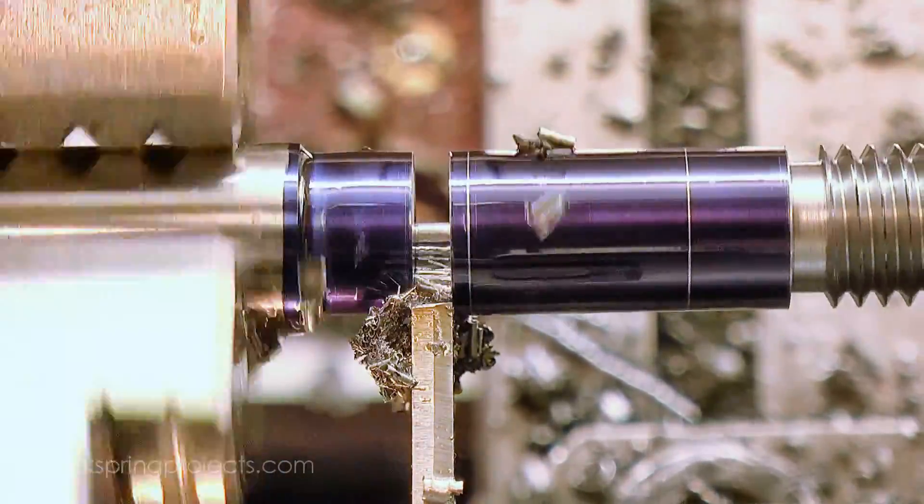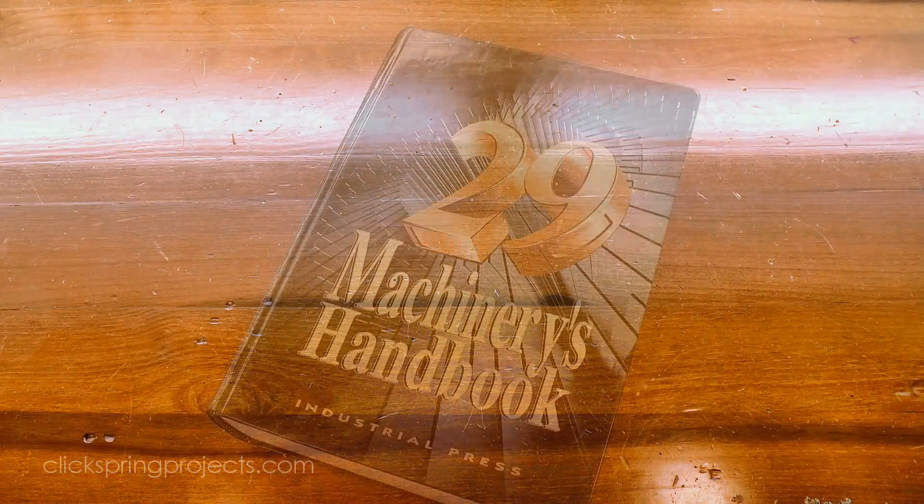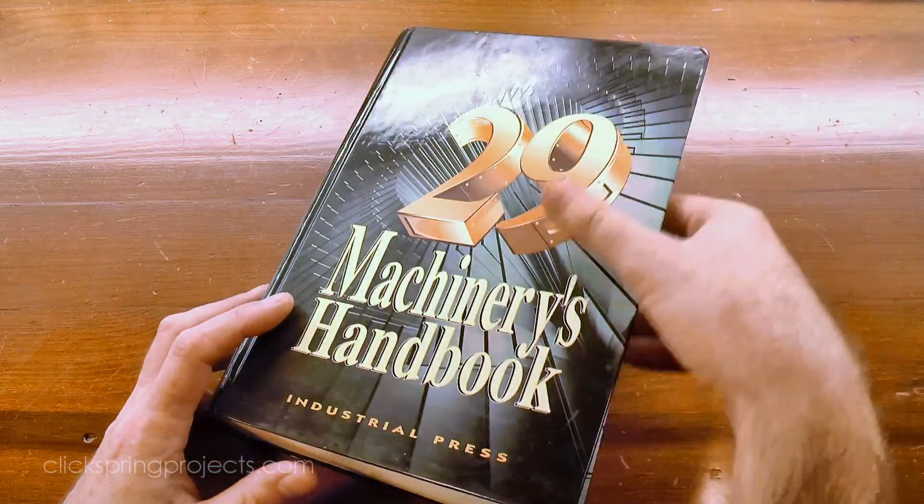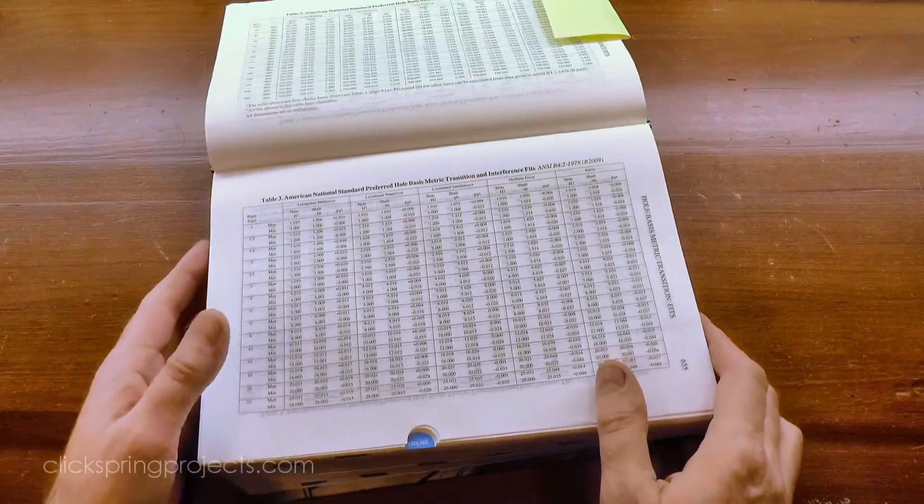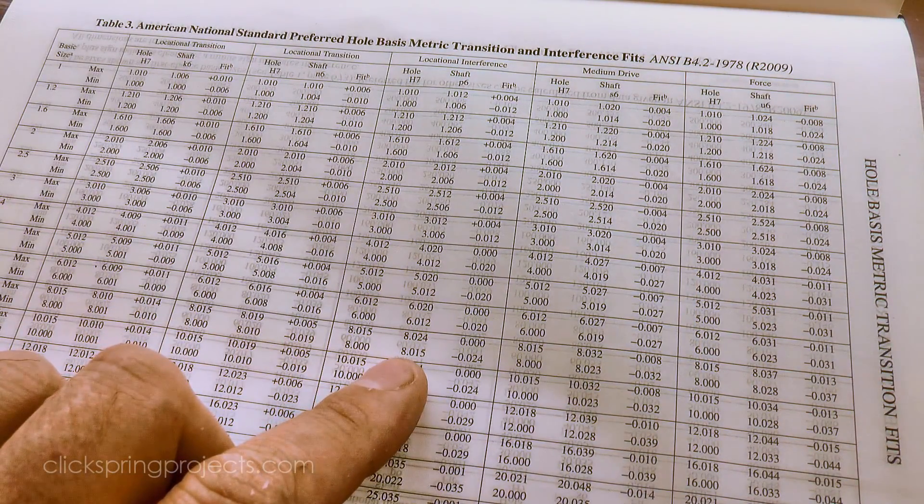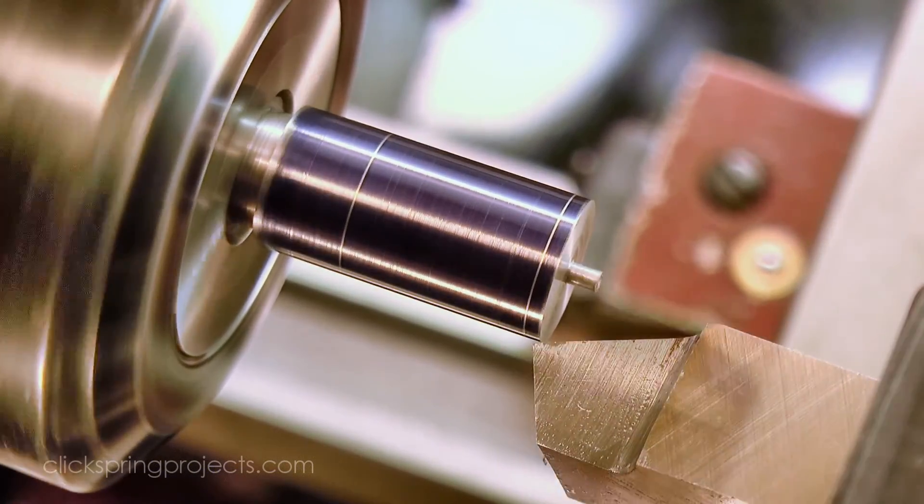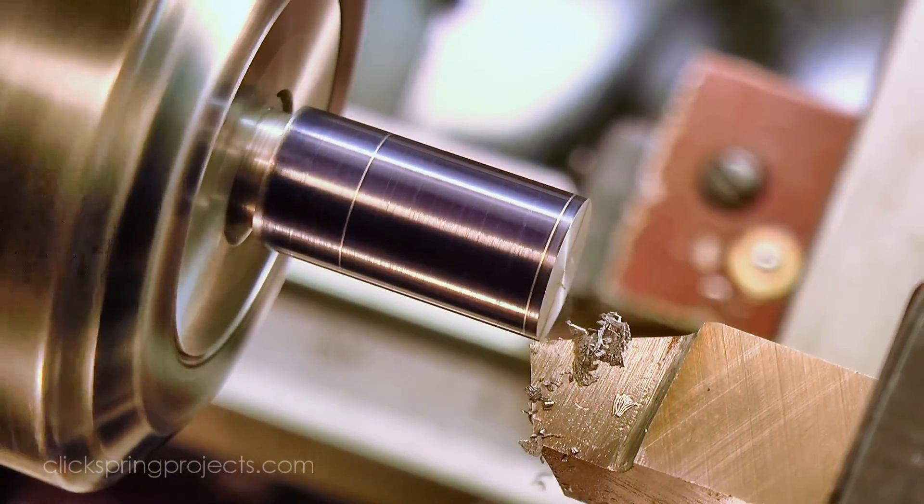Ok, so I mentioned that I'll be fixing these two parts together with a press fit, and I need some guidance on an appropriate oversized dimension for the spigot. Machinery's Handbook tells me that in this case, something like 1.5 hundredths of a millimetre over the ream dimension will give me a nice locational interference fit, so that's the dimension that I'm shooting for over the nominal figure.